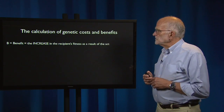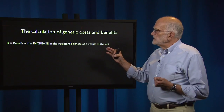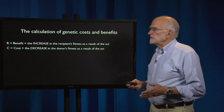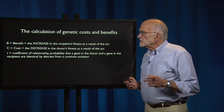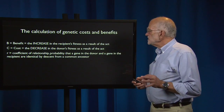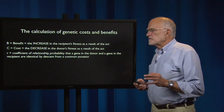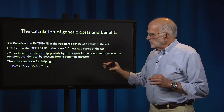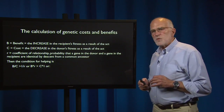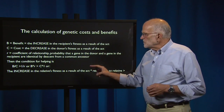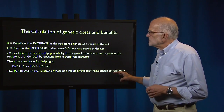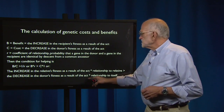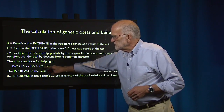How do we calculate genetic costs and benefits? If we let B equal benefit — that would be the increase in the recipient's fitness as the result of an act — and C, the cost, would be the decrease in the donor's fitness as the result of an act, and R is the coefficient of relationship, which is the probability that a gene in the donor and a gene in the recipient are identical by descent from a common ancestor. Given that, the condition for helping is that B divided by C is greater than 1 divided by R, or that B times R is greater than C. In English: the increase in the relative's fitness times the relationship to the relative (B times R) is greater than the decrease in the donor's fitness times its relationship to itself, which is 1.